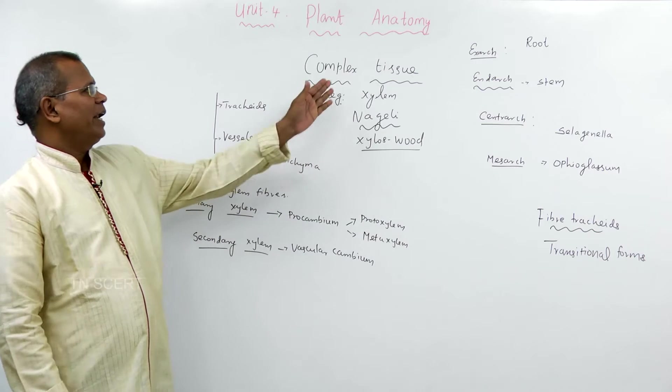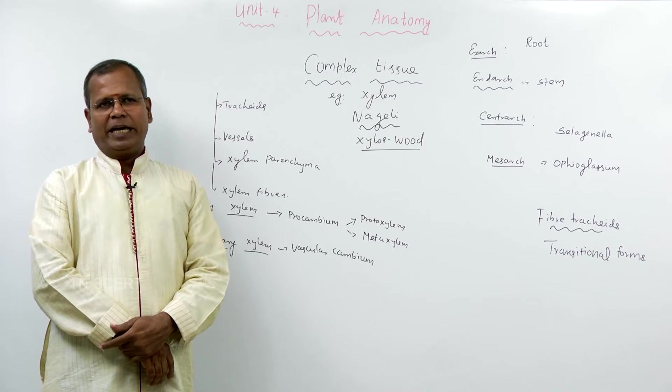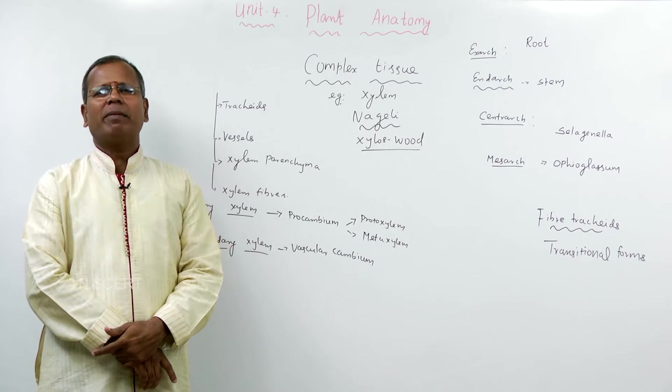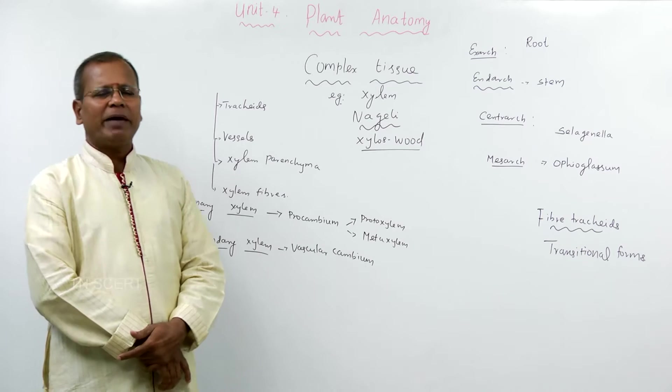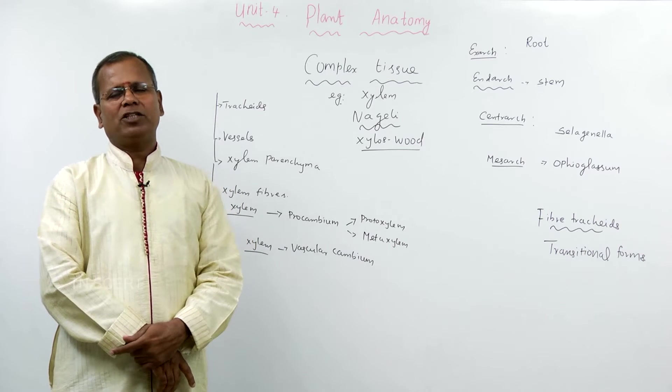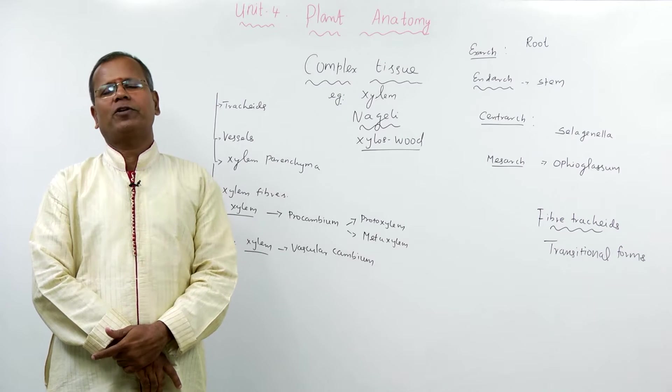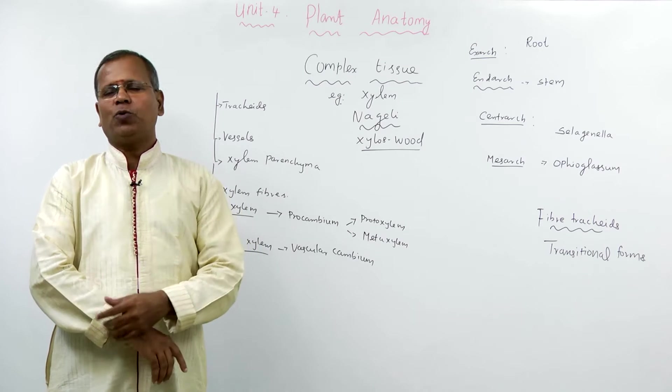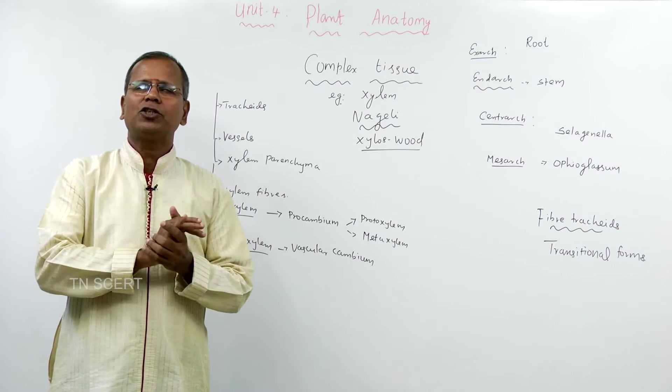Dear students, now we are going to see the complex tissue xylem. If you look at the tissues, meristematic tissue and permanent tissue are the apical meristem, intercalary meristem, lateral meristem. Then permanent tissue, one is the simple tissue, another is the complex tissue.